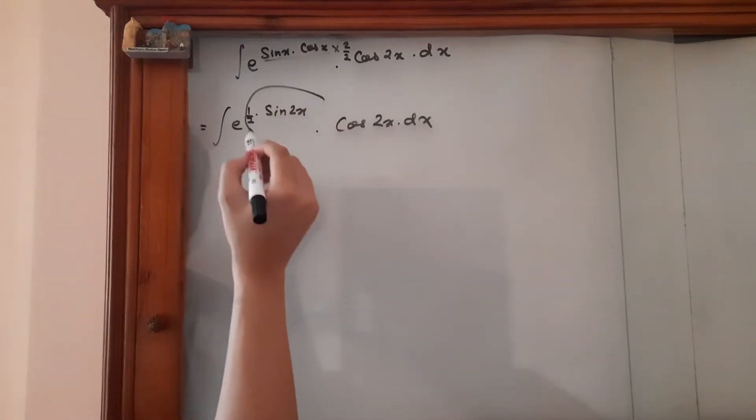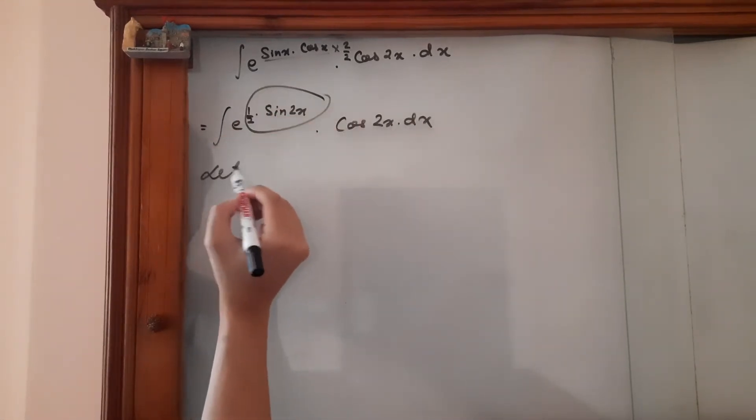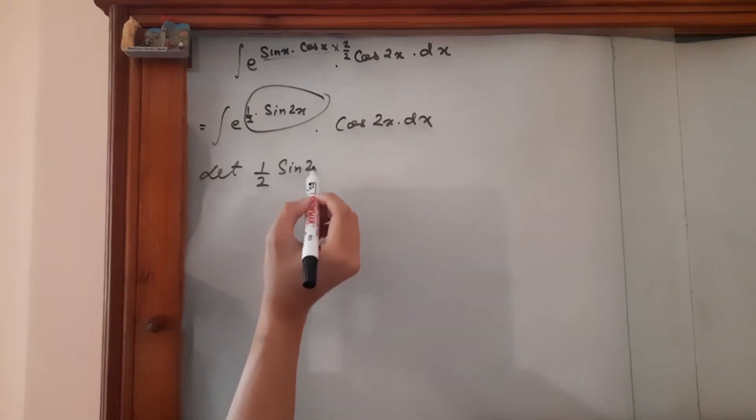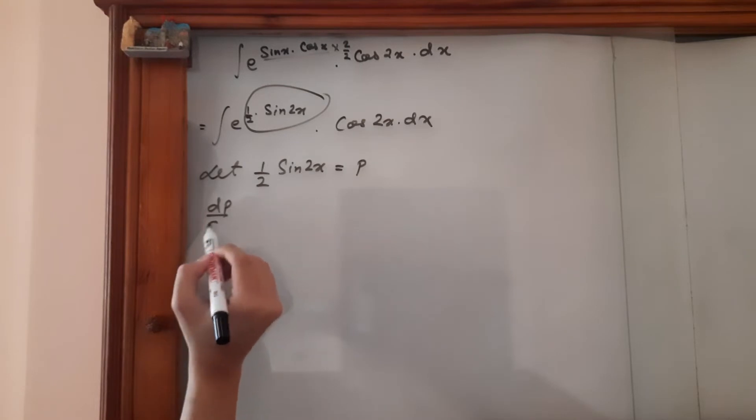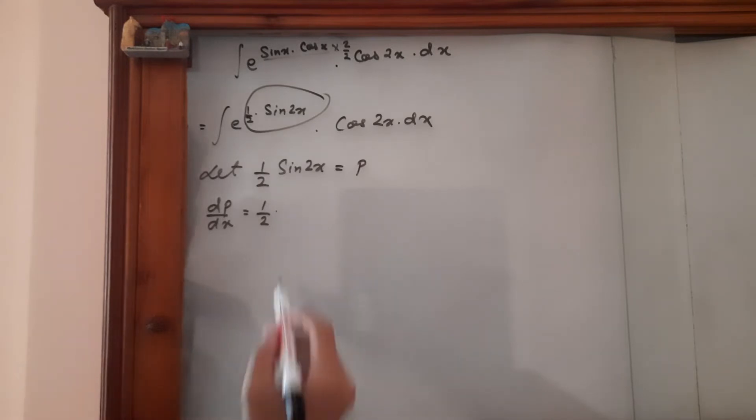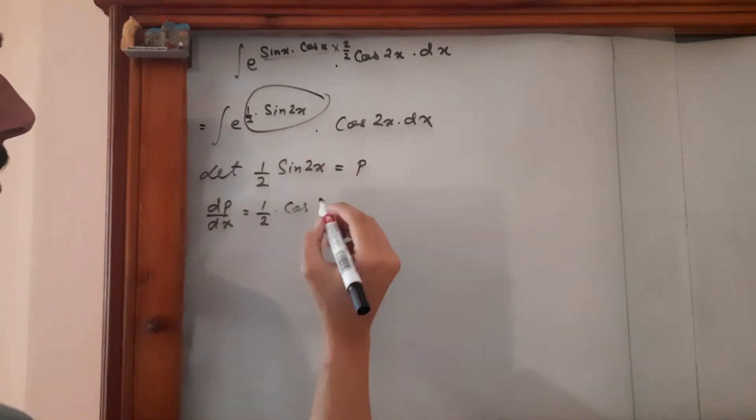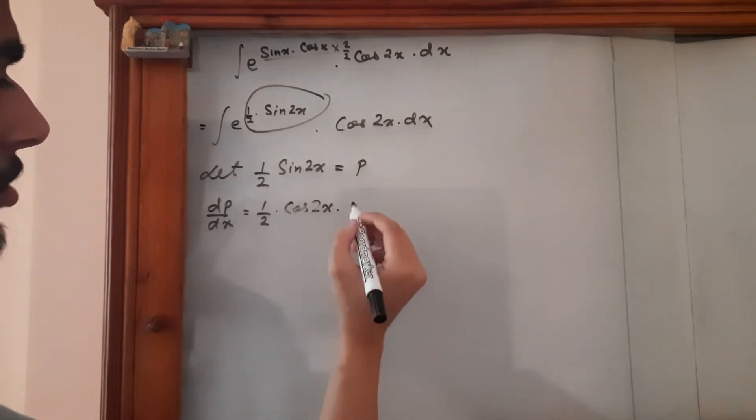Now let's suppose this whole term, let 1 upon 2 sine 2x is equal to p. Now let's differentiate p with respect to x. 1 upon 2 is the constant. The derivative of sine 2x would be cos 2x times 2.